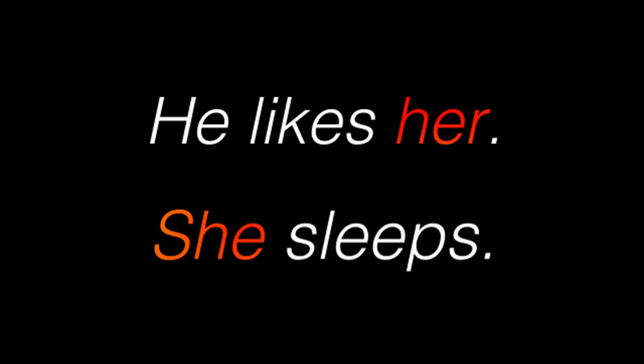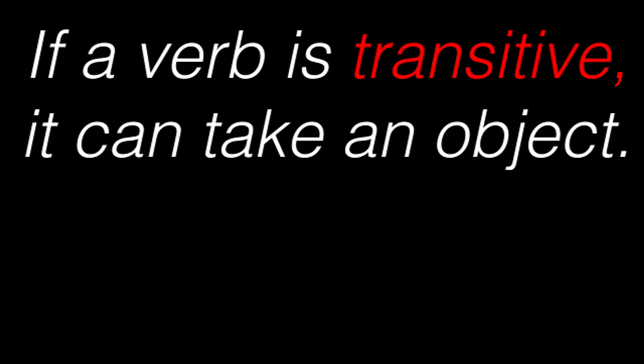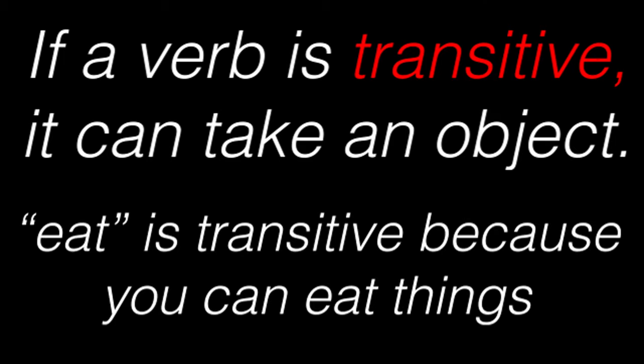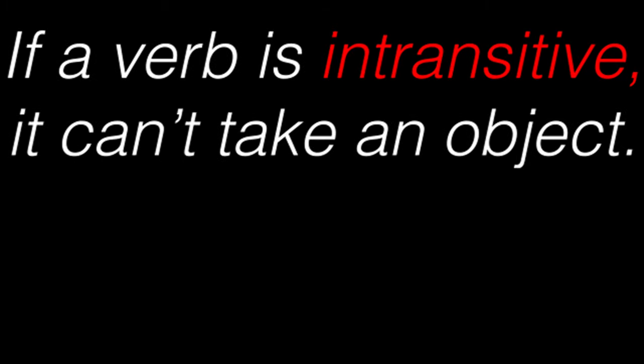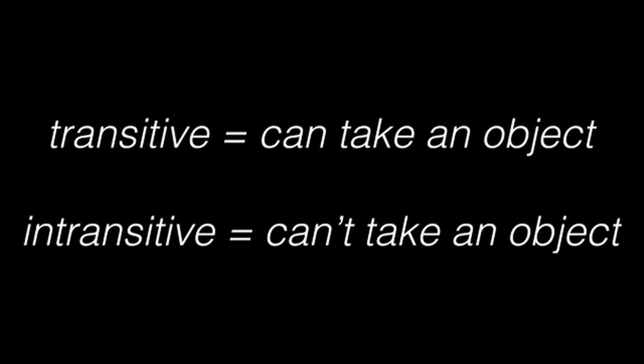Before moving on, let me define two terms. If a verb is transitive, it means that it takes an object. For example, eat is transitive because you can eat something — the verb can take an object. But if a verb is intransitive, it doesn't take an object. For example, sleep is intransitive because you can't sleep something.